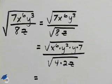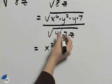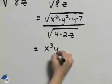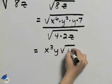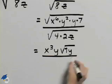I can now simplify this. The square root of x to the sixth is x cubed. The square root of y squared is y. We're left with 7y in the top, the square root of 7y.